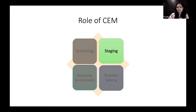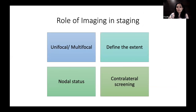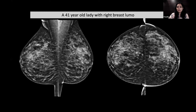The second major role of CEM is in local staging. Imaging for local staging needs to determine: whether the cancer is unifocal or multifocal, the actual extent of the abnormality for breast conservation surgery planning, nodal status, and contralateral breast screening.